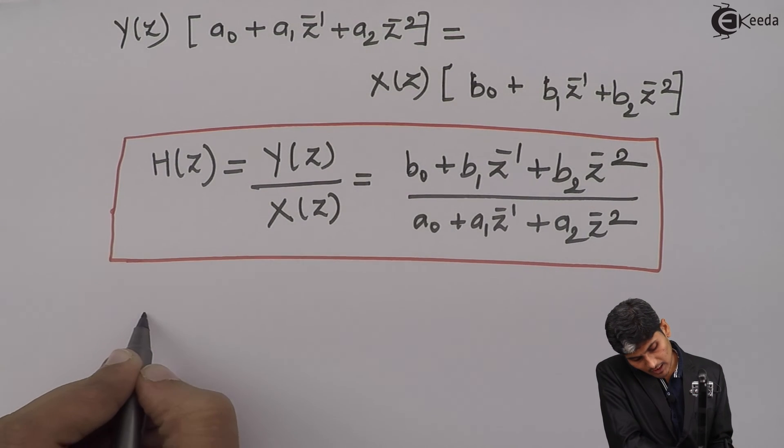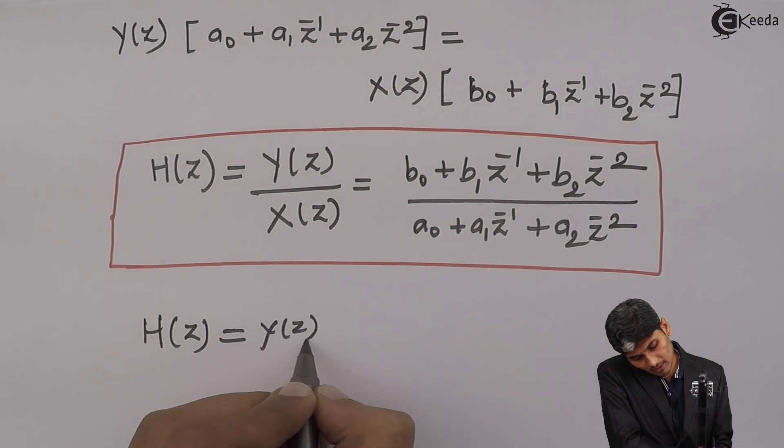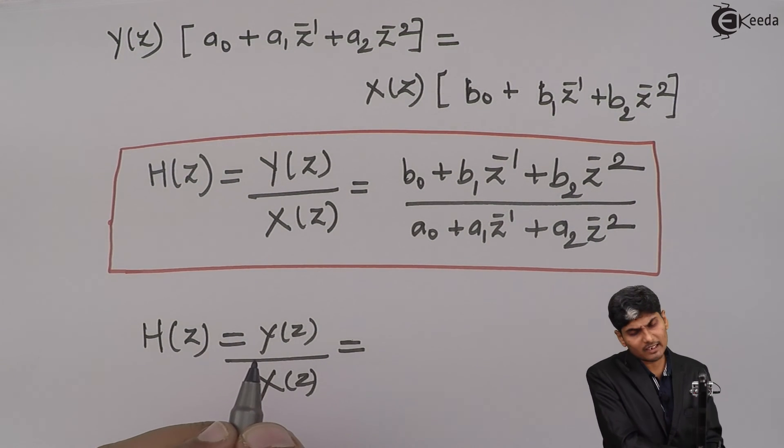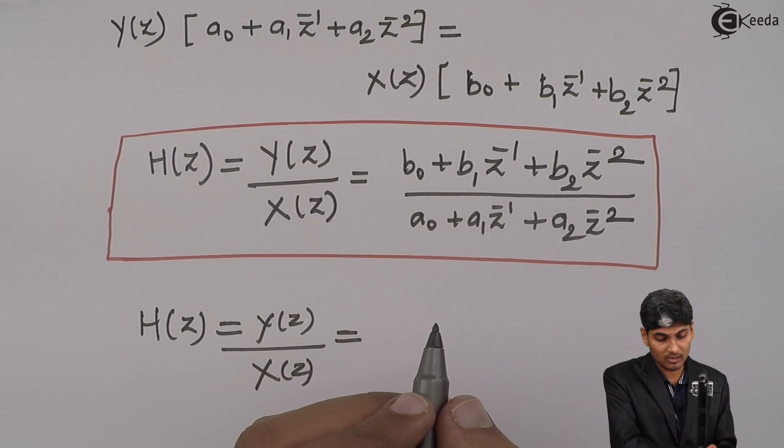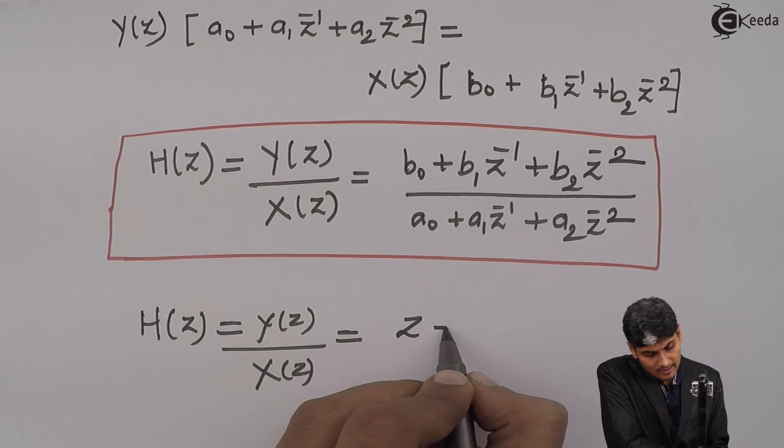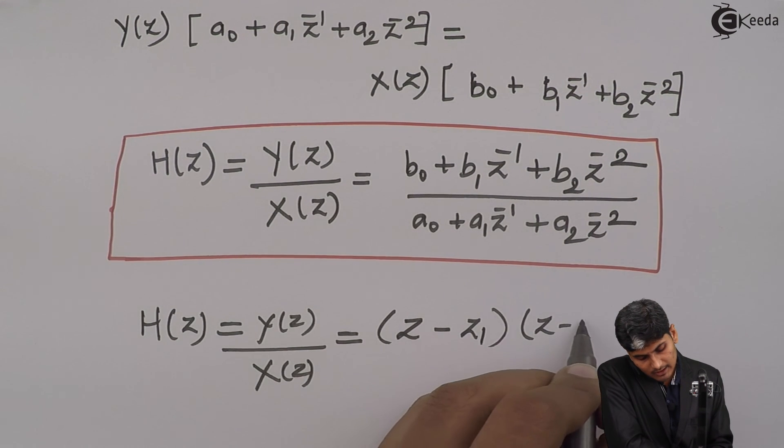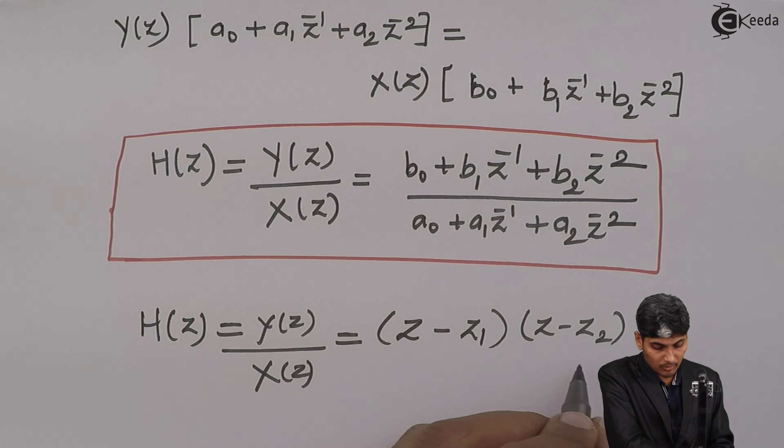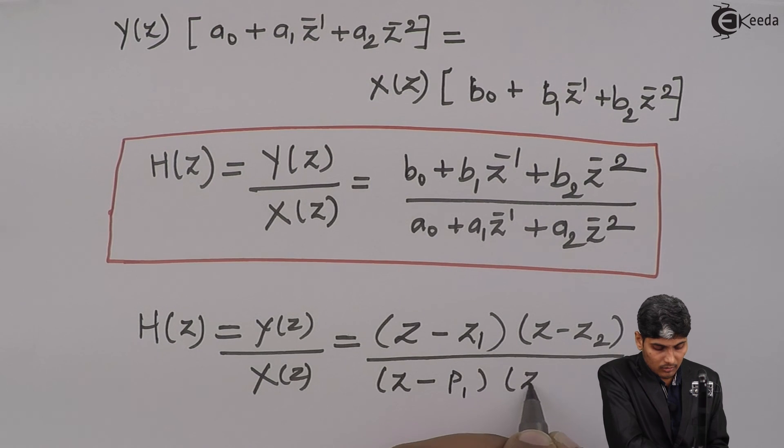Then it becomes H(z) equals Y(z) by X(z) equals to, let us say there are certain roots that I am getting because we have not assumed what is b_0, b_1, b_2. Then I say that I am getting (z minus z_1) into (z minus z_2) because there will be 2 roots because degree of polynomial is 2.